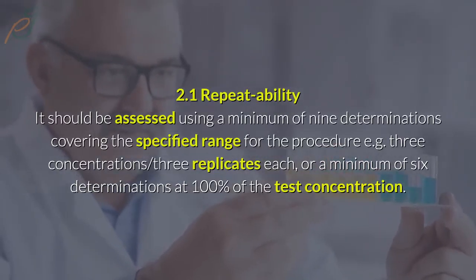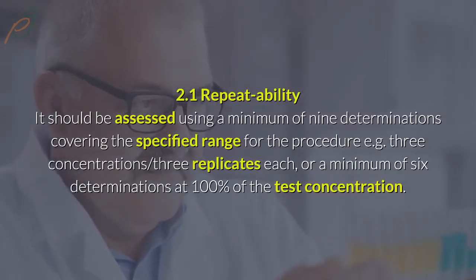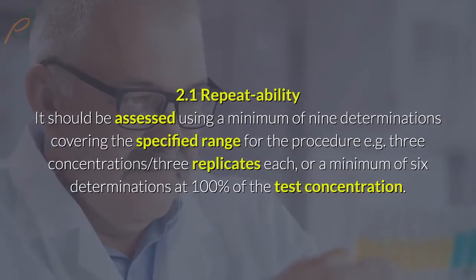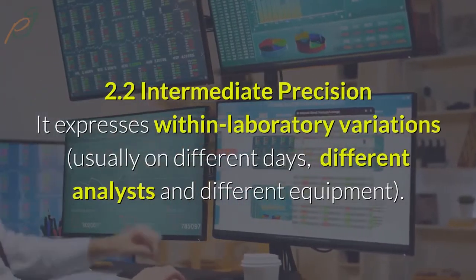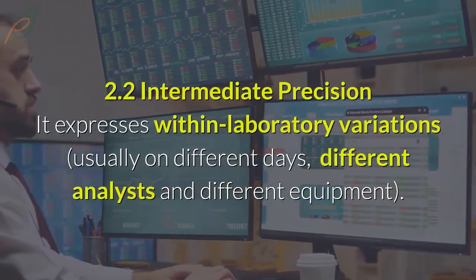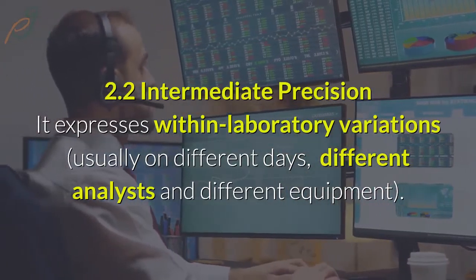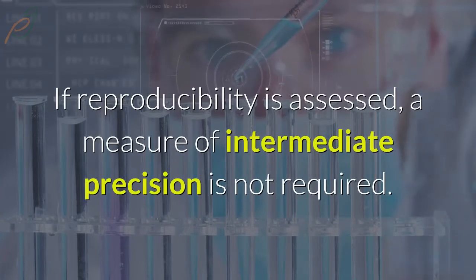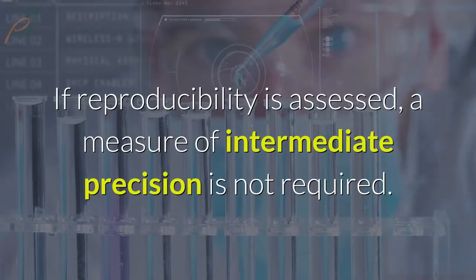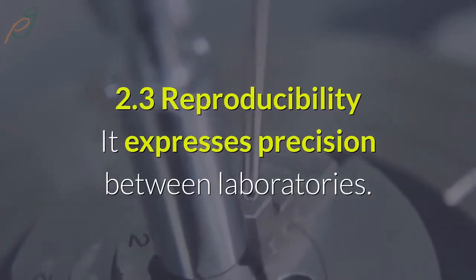2.1 Repeatability: It should be assessed using a minimum of nine determinations covering the specified range for the procedure (e.g., 3 concentrations with 3 replicates each), or a minimum of six determinations at 100% of the test concentration. 2.2 Intermediate precision: It expresses within-laboratory variations, usually on different days, with different analysts and different equipment. 2.3 Reproducibility: It expresses precision between laboratories. If reproducibility is assessed, a measure of intermediate precision is not required.